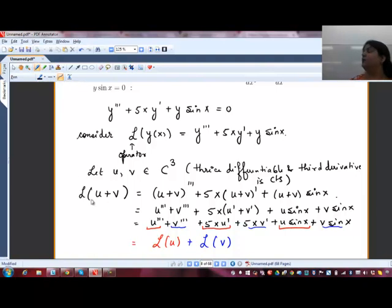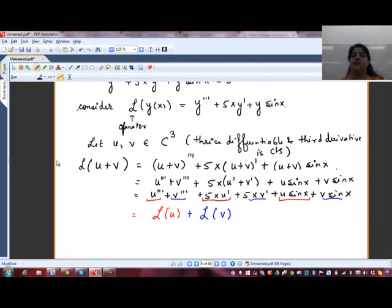If I insert a sum of two functions in this operator which is free from purely x function and only involves the terms containing y, then when we input the sum of two functions, it will be same as if you input them individually, apply this operator, and then add the final product. This is called the additivity property. If this property gets satisfied, and the second property is if L times a scalar multiple of u...